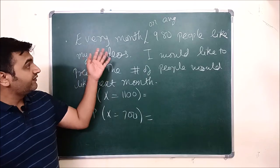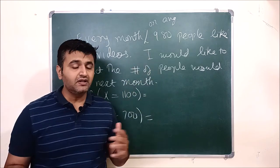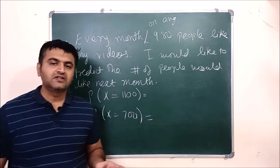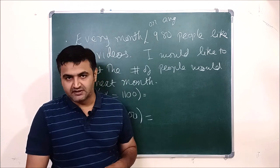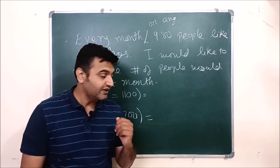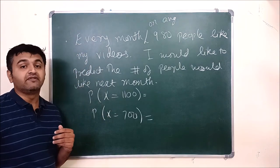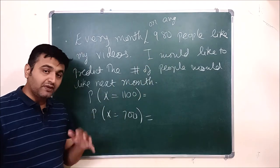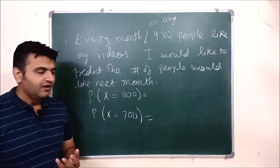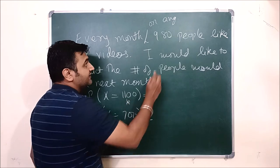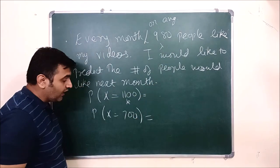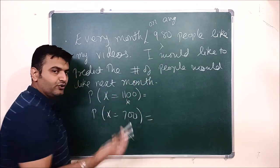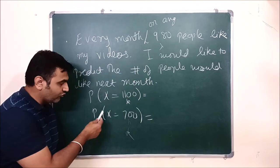Here is another example: suppose every month on average 980 people like my videos. I would like to know that in the next month, what is the probability that 1100 people will like my video, or what is the probability that 700 people will like my video. So K is 1100 or 700 respectively, lambda is 980. You apply the formula and get the answer. This can apply to subscribers, website hits, or blog views.